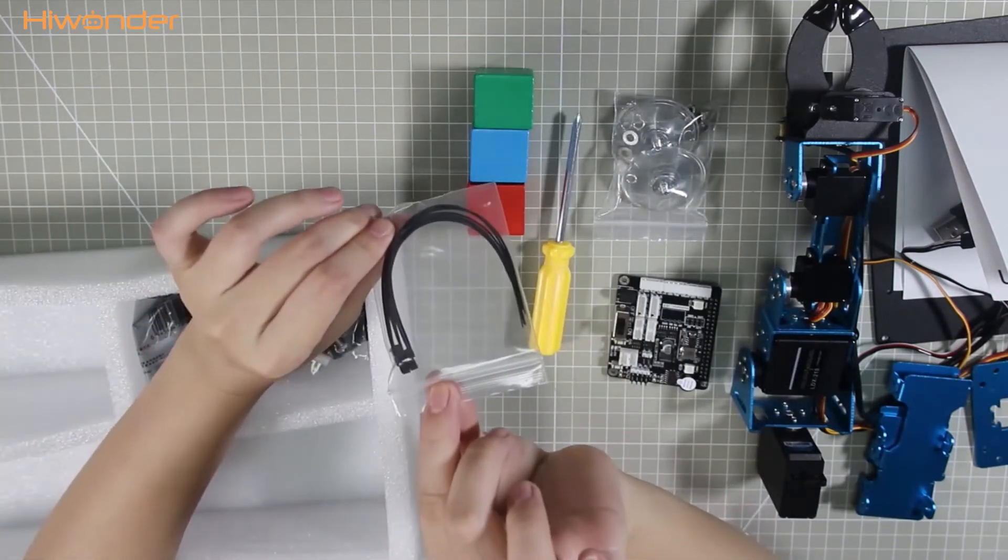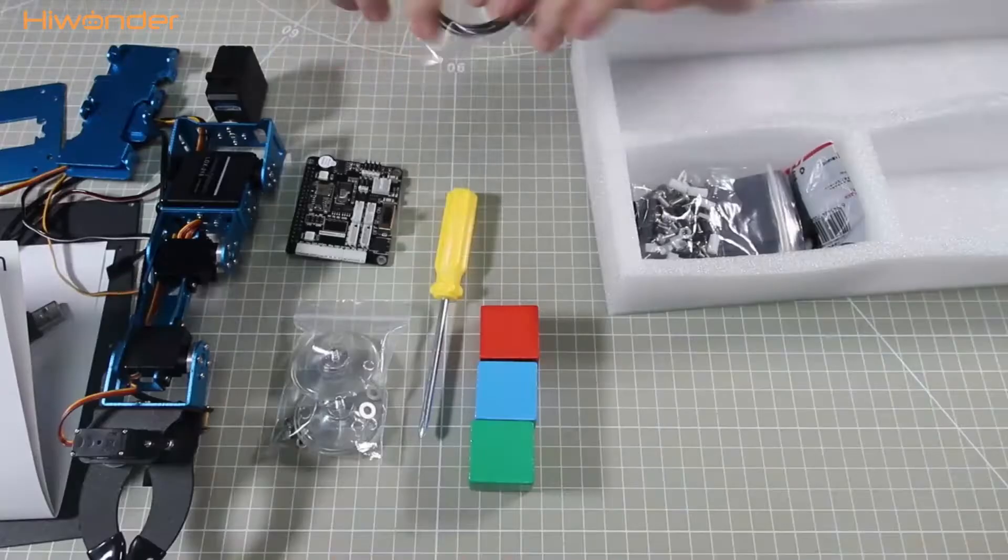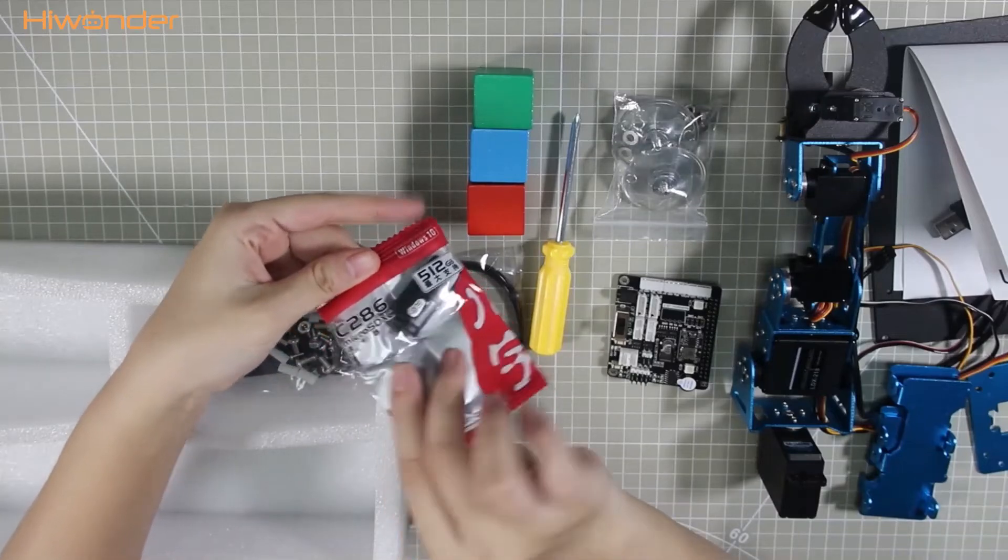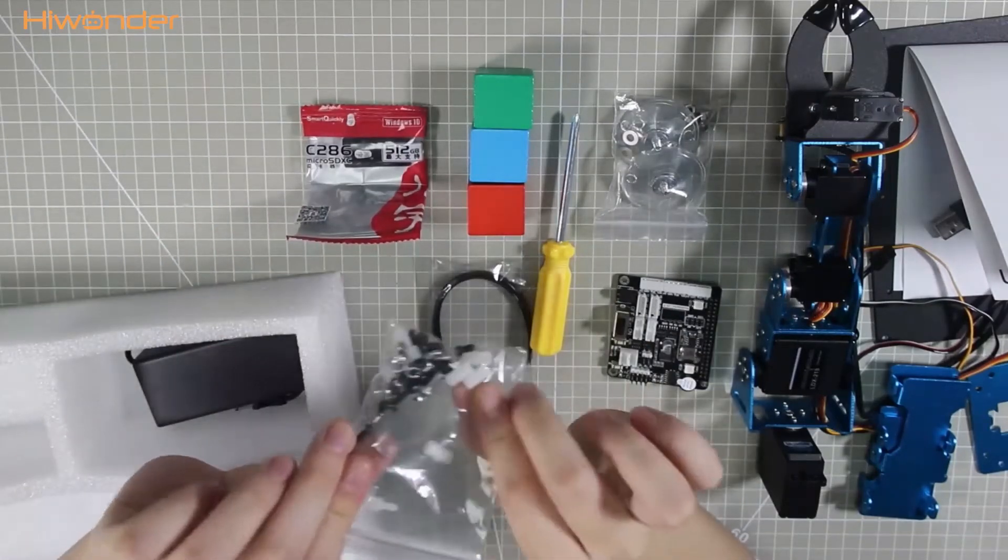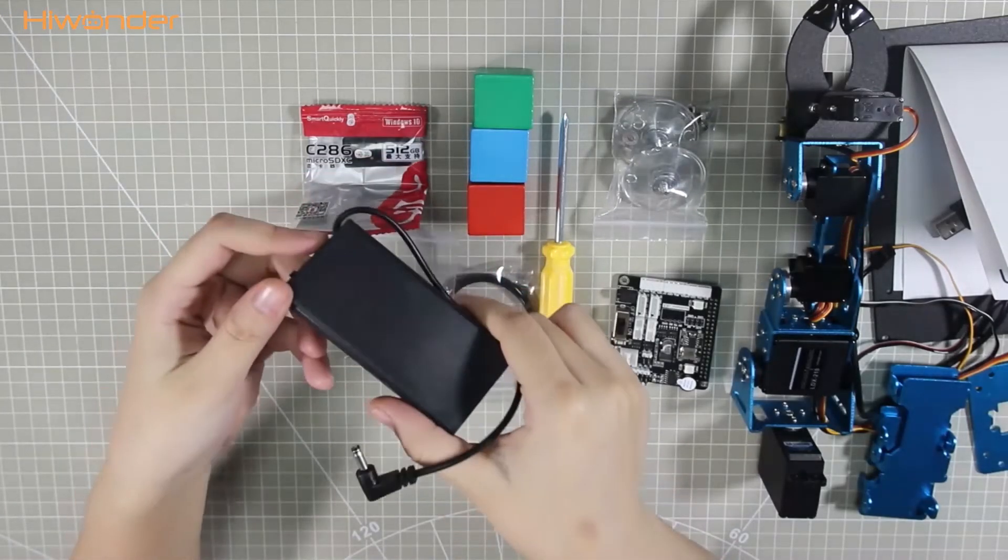Several cable ties for organizing cables, a 16GB SD card - you need to write the system image into it - backup screw accessories, and a battery box.